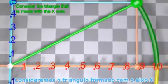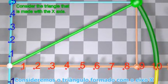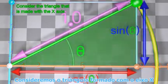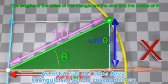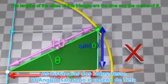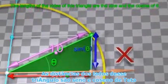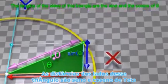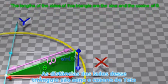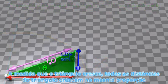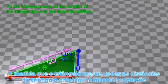Consider the triangle that is made with the x-axis. The lengths of the sides of this triangle are the sine and the cosine of theta. As the triangle grows, all the lengths of the triangle grow by the same proportion.